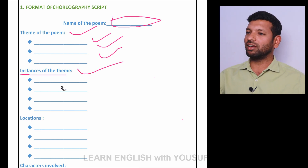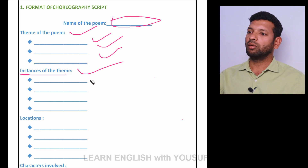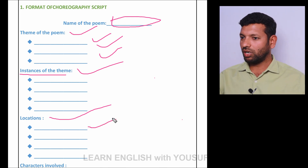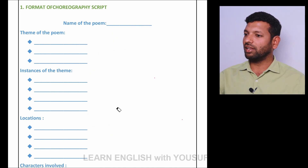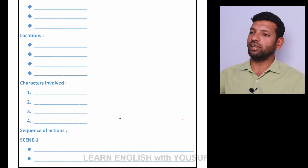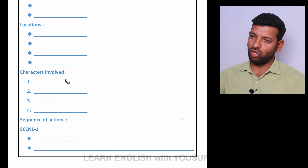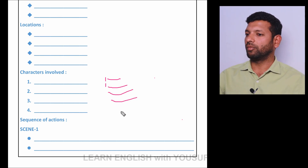Then you take the heading: instances of the theme — the stanza-wise theme that you can pick out. After that, the locations — what are the locations. If you take the example of 'Another Woman,' the locations are: vegetable market, home interior, and society. Then, characters involved — if you take 'Another Woman' again: mother-in-law, daughter-in-law, husband, and the society and people in the street.